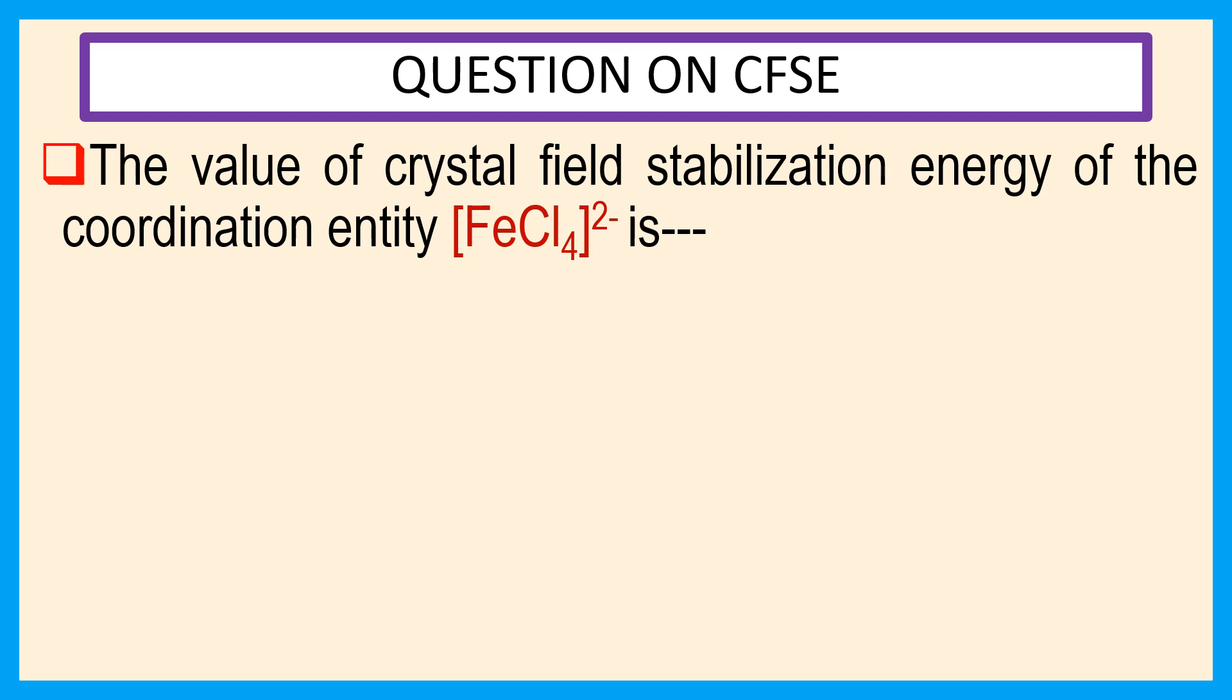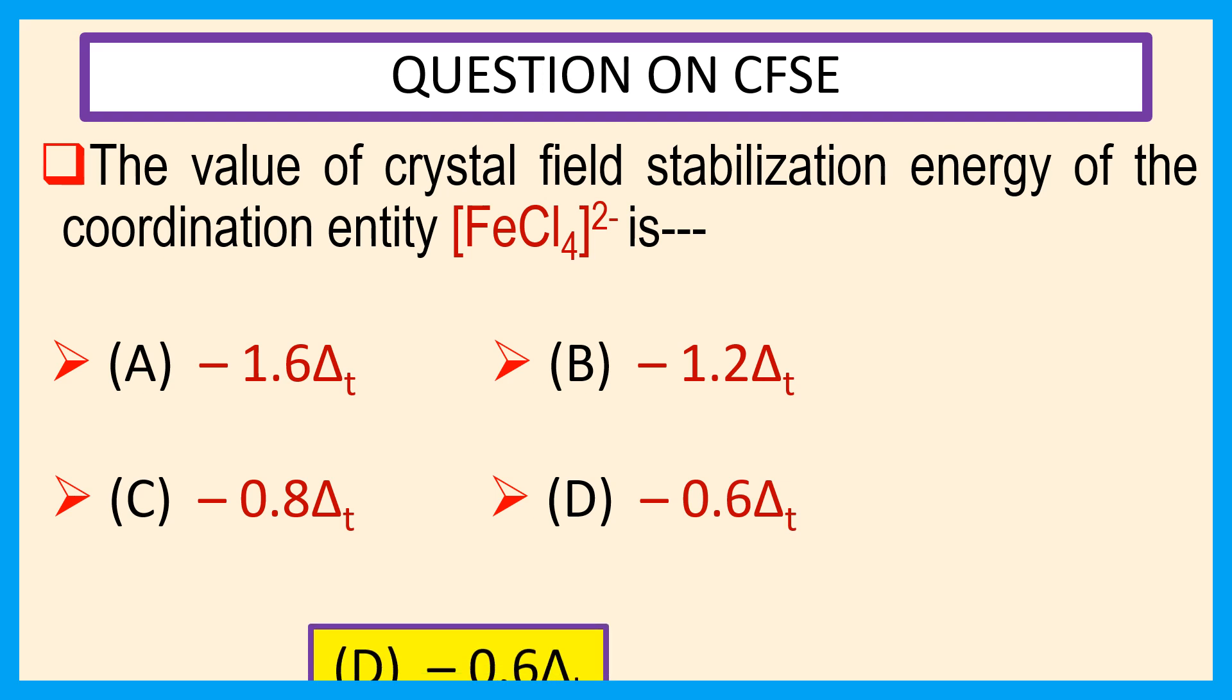Choices are A minus 1.6 delta t, B minus 1.2 delta t, C minus 0.8 delta t, D minus 0.6 delta t. Answer is D minus 0.6 delta t.